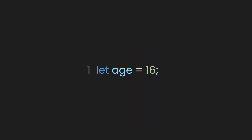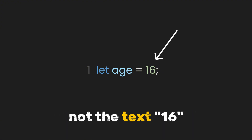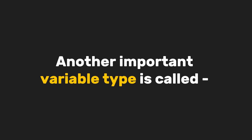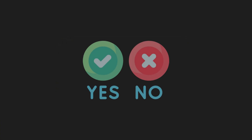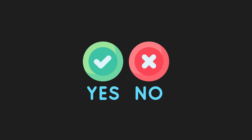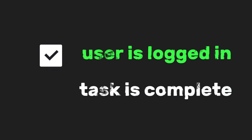For example, we're telling JavaScript this is the number 16, not the text 16. Another important variable type is called Boolean, which represents a simple true or false value. Booleans are like yes-no answers in programming. They help make decisions and track conditions — for example, showing if a user is logged in or if a task is complete.